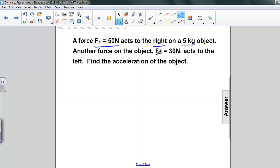There's another force acting on the object, F2, which is equal to 30 newtons, and it acts to the left. We're asked to find the acceleration of the object.